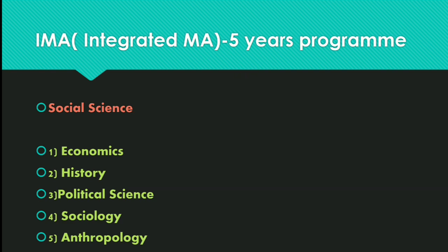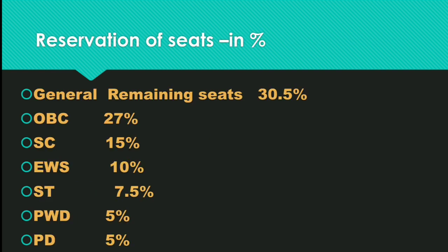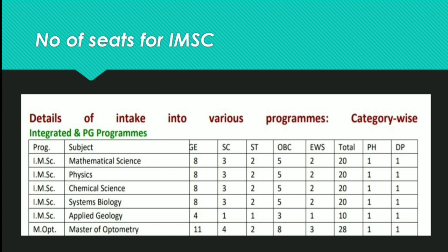In Social Sciences, the streams are Economics, History, Political Science, Sociology, and Anthropology. Reservation of seats in percentage: General 30.5%, OBC 27%, SC 15%, EWS 10%, ST 7.5%, Physically Handicapped 5%, and Defense 5%. Here are the number of seats for Integrated MSc programs.